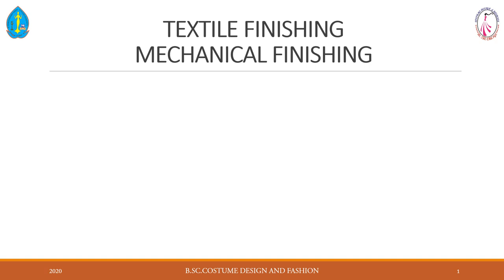Good morning students. Today we are going to discuss textile finishing — specifically one of its types: mechanical finishing. We will elaborate on mechanical finishing and its types. Mechanical finishing is a process of applying a special property to the fabric surface by means of machines or some mechanical process. Let us see the types of mechanical finishing one by one.